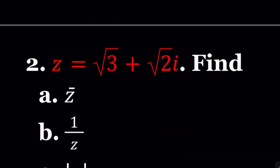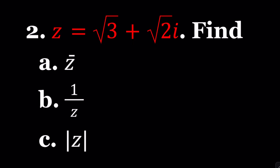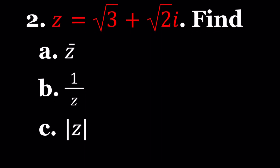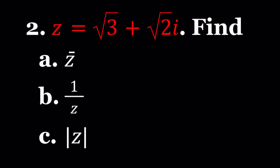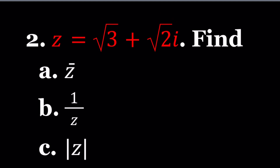Let's take a look at number 2. We have a complex number z equals square root of 3 plus the square root of 2 times i. We're supposed to find three things: the complex conjugate, the reciprocal, and the absolute value. The z conjugate is basically obtained by changing the imaginary part, so it's going to be square root of 3 minus square root of 2 times i.